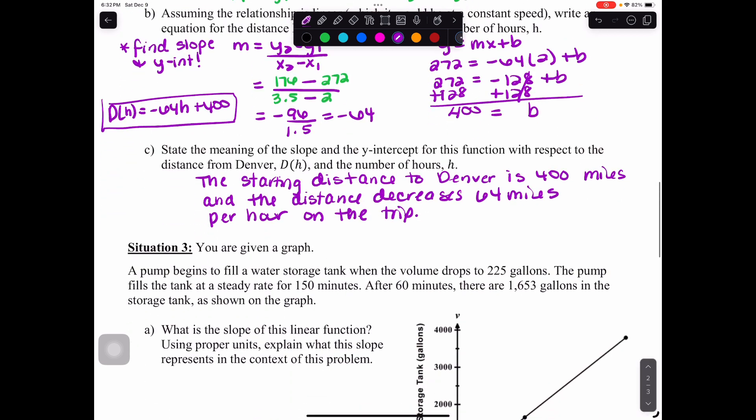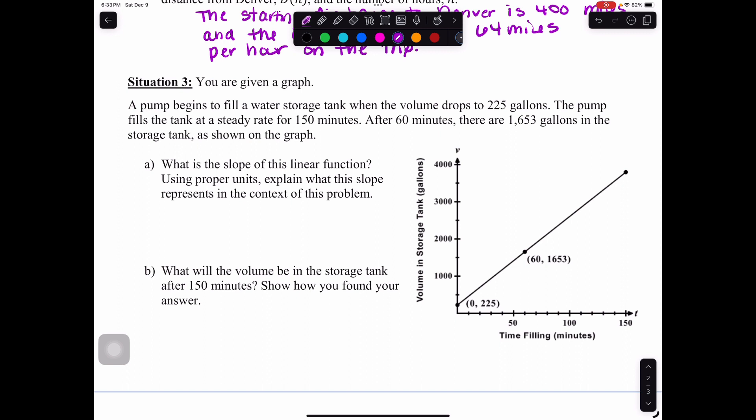We'll look at our last possible situation, which is you're given a graph. If you're given the graph, let's look at this new problem. A pump begins to fill a water storage tank when the volume drops to 225 gallons. The pump fills the tank at a steady rate, so there's that whole idea of constant rate in a linear model, for 150 minutes. After 60 minutes, there are 1,653 gallons in the storage tank as shown on the graph. So you've got a graph here.